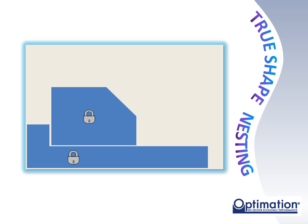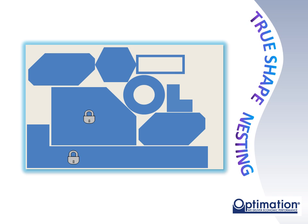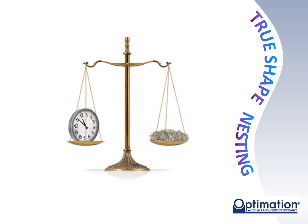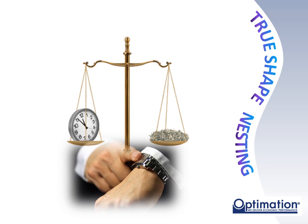This means that the fit of that part with the parts that will be placed after it are not taken into consideration. Thus, true shape nests have a tendency to become less efficient as the layout progresses. Also, since each allowable rotation significantly increases the number of alternatives evaluated, you can end up trading off nesting time for efficiency. When evaluating a true shape system, you should make sure to determine if the results you desire can be obtained in the time allowed by your unique manufacturing environment.